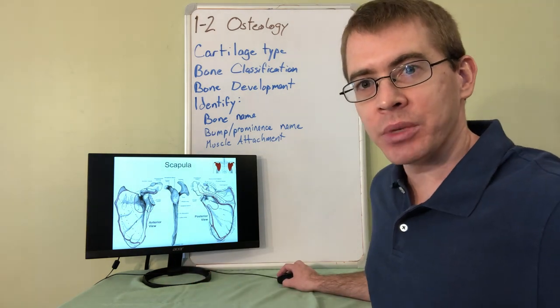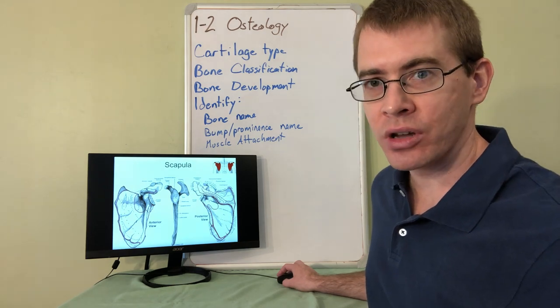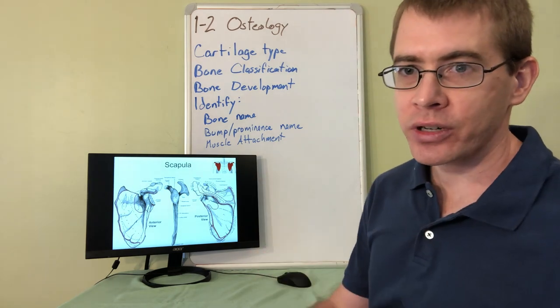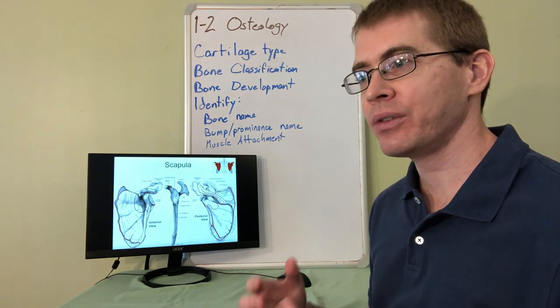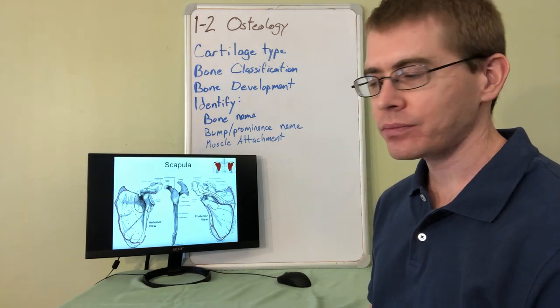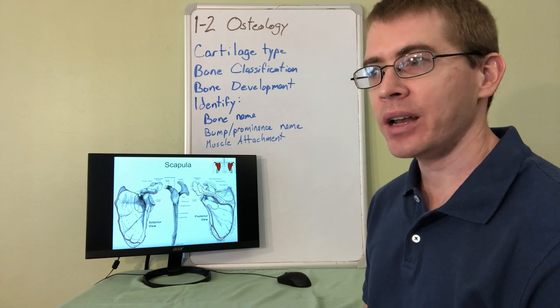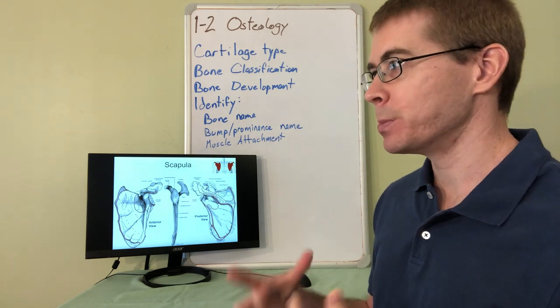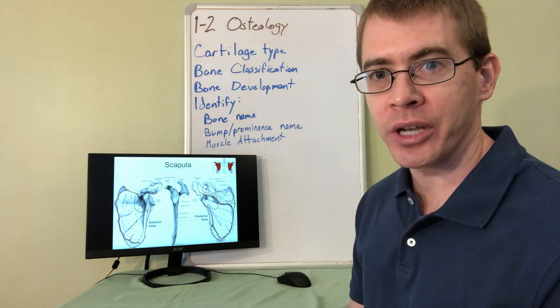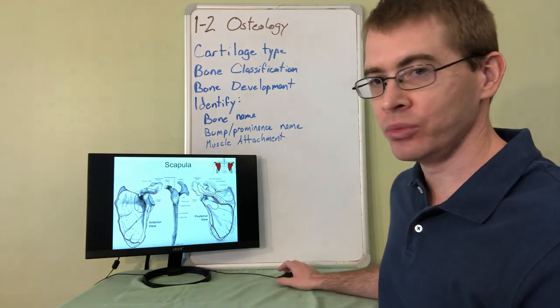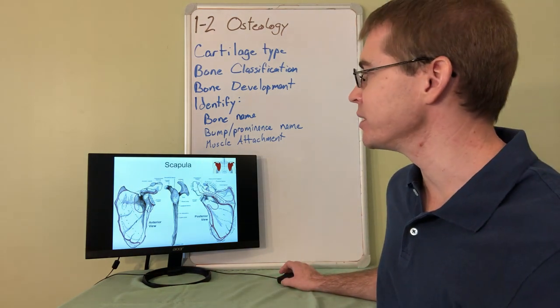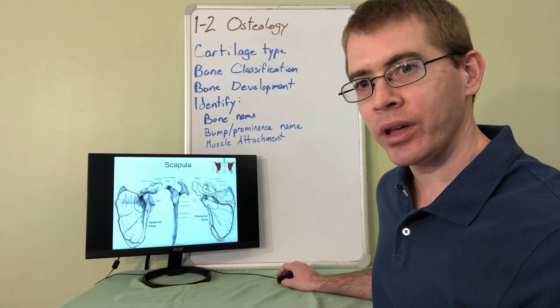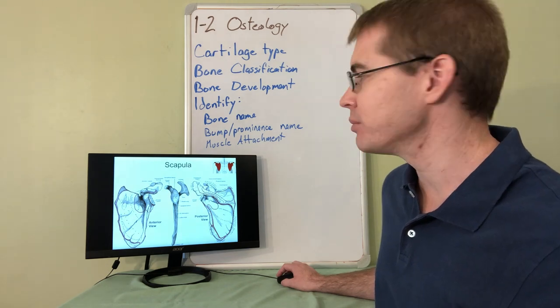The second exam is going to be abdomen, pelvis, and lower limbs. So you need to know those bones, all of their prominences, those sorts of things. And this information is critical because it forms the basis of your understanding for the muscle movements. Understanding where a bone attaches and how the vector of that attachment is critical for all of the subsequent information that you're going to be tested on about muscle movements and kinesiology and things like that. Understanding this information, you can diagnose muscle weaknesses knowing the attachment points, knowing the vectors of the muscles, etc.